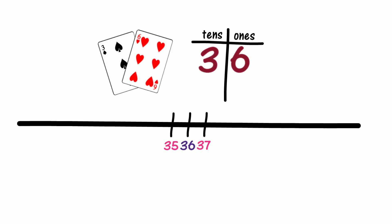Is this the only place on the number line that 35 could go? Where would 46 be on our number line? Would 46 be on the right of 36? Is it because 46 is 10 higher than 36? In which direction do numbers get higher on a number line? Do numbers get higher as we move to the right? Is this the only place that 46 could be?